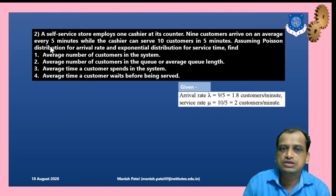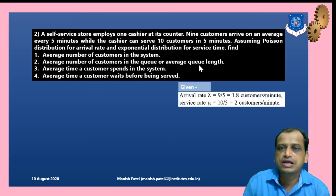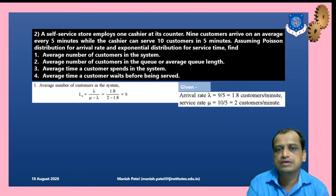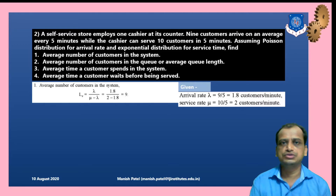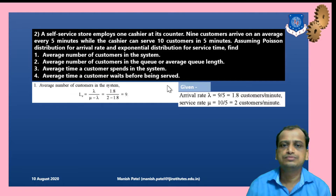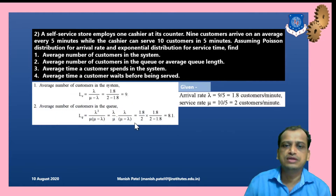Given: arrival rate λ = 1/5 × 9 customers per minute ≈ 1.8 customers per minute, and service rate μ = 10/5 = 2 customers per minute. For average number of customers in the system: Ls = λ/(μ − λ). Putting in λ = 1.8 and μ = 2, we get Ls = 9 customers in the system.